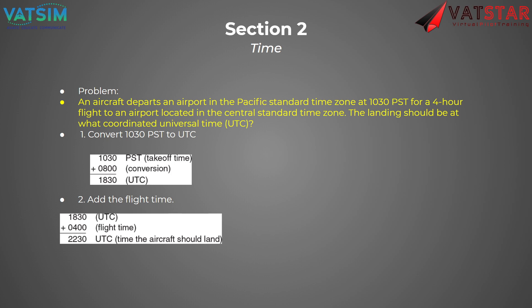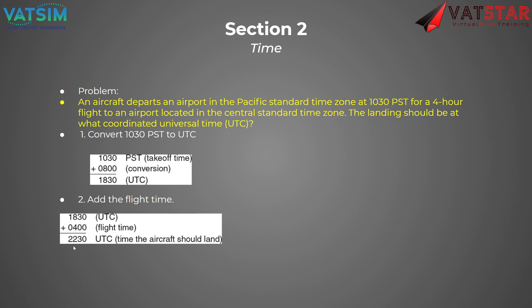Here's a problem: an aircraft departs an airport in the Pacific Standard Time Zone at 1030 PST for a four-hour flight to an airport in the Central Standard Time Zone. What time is landing in UTC? First, convert PST to UTC — the conversion is eight hours. So 1030 plus 8 hours is 1830 UTC, which is 6:30 p.m. Universal Time Coordinated. Then add the four hours of flight time — that's 2230 UTC. If you want to convert back to Central Standard Time, that would be a six-hour conversion, so 2230 minus 6 hours is 1630, meaning landing at 4:30 p.m. Central Standard Time.